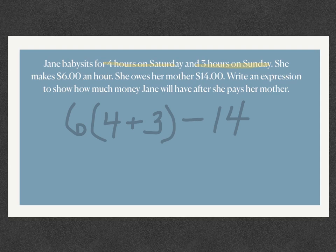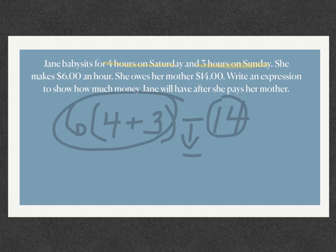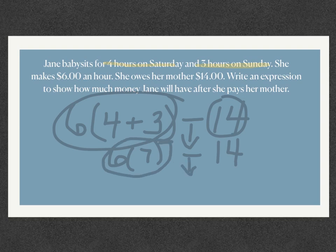I'm going to solve this one just to show you how it works. I circle my two terms, bring my subtraction sign down, and keep the fourteen. Inside the parentheses four plus three is seven, so now I have 6 × 7 − 14. I still have the subtraction sign so I circle my terms again — six times seven is forty-two — and then finally I subtract fourteen from forty-two, which gives me twenty-eight: the total amount of money Jane received for babysitting.